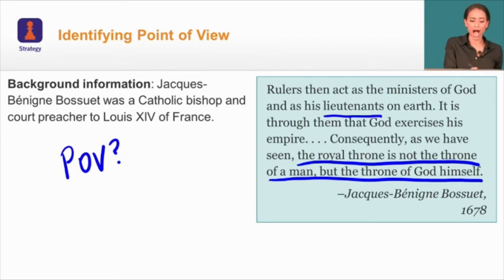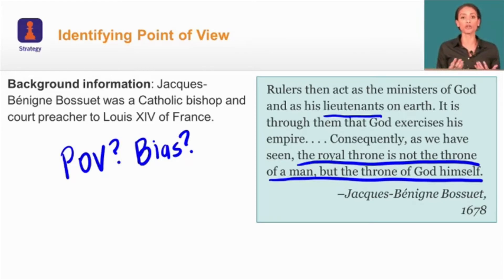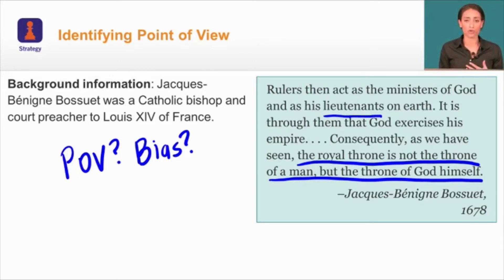When we look at this quote, it's important to consider not only the words used, but the speaker's perspective and potential bias. Is there any bias in what Bossuet is saying? We have to consider: what would be the alternative? If Bossuet said he disagreed with divine right, what could potentially happen to him?